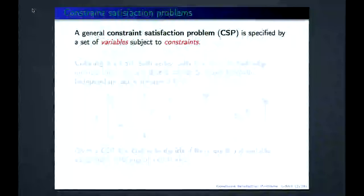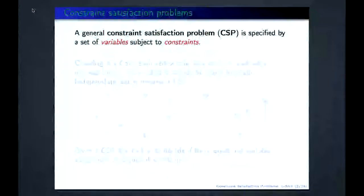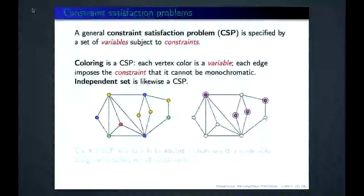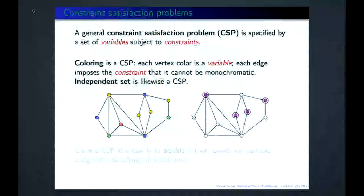This is a repeat of what a constraint satisfaction problem is. It's a set of variables subject to constraints. The variables are vertices in a graph and the constraints are the edges. We mentioned two problems in the first lecture: coloring, where each vertex color is a variable and each edge imposes the constraint that it cannot be monochromatic.